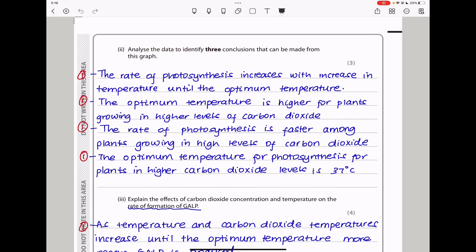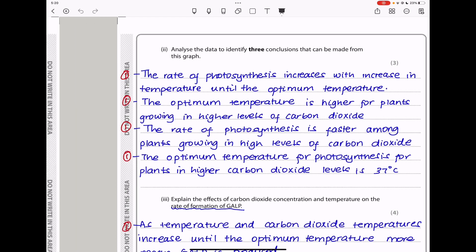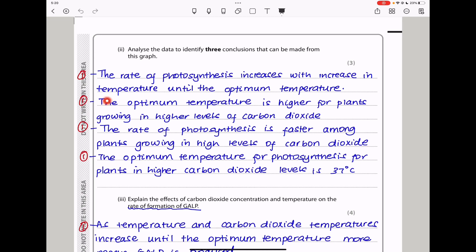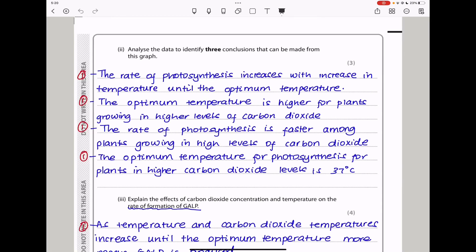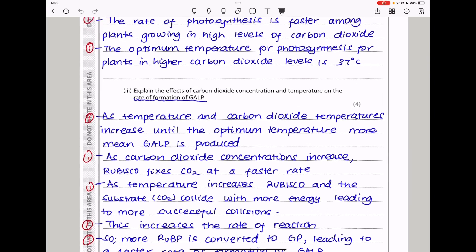Moving on, they say analyze the data to identify three conclusions that can be made from this graph. Based on the graph, the rate of photosynthesis increases with increase in temperature until the optimum temperature is reached. And then the optimum temperature is higher for plants growing in higher levels of carbon dioxide than those in lower levels of CO2, like we can see here. This is higher and that is lower. Also, the rate of photosynthesis is faster among plants growing in high levels of carbon dioxide. You saw the curve was quite high. And the optimum temperature for photosynthesis for plants in higher carbon dioxide levels is about 37 degrees Celsius.